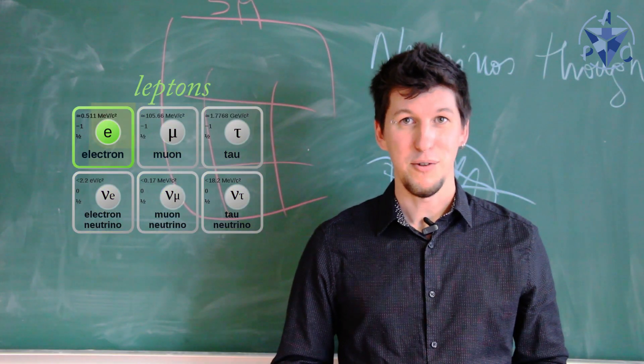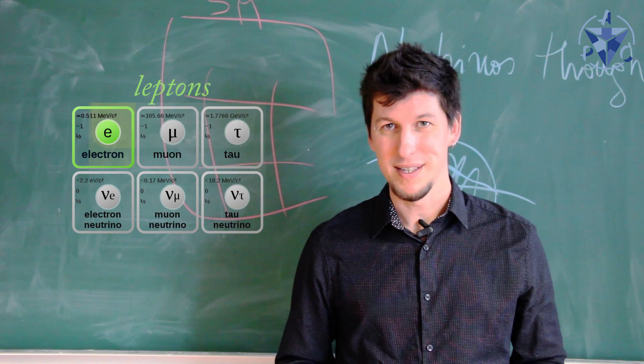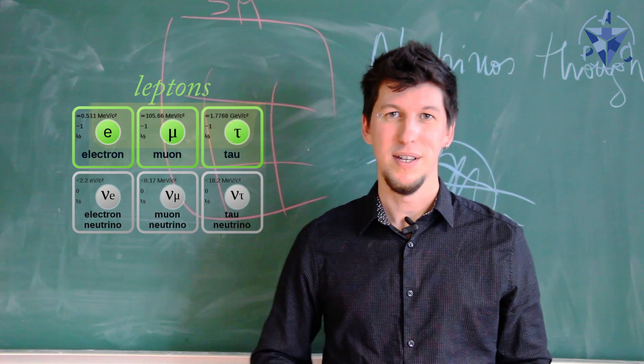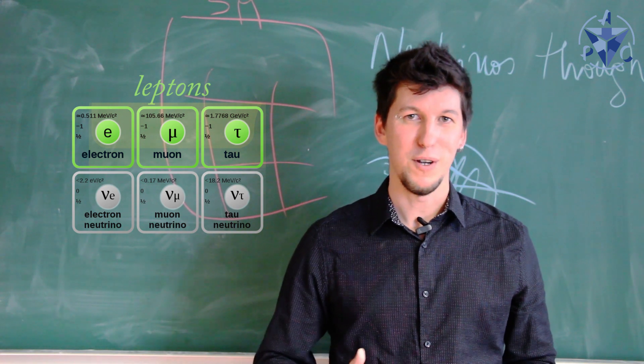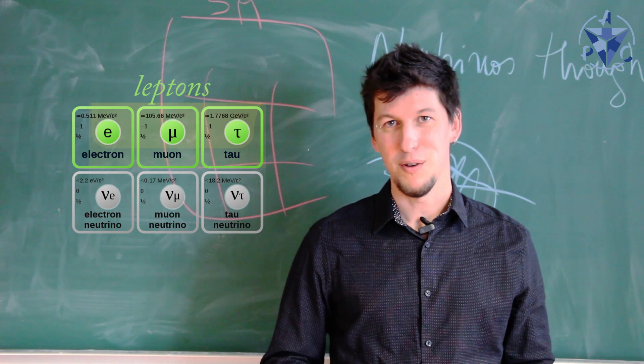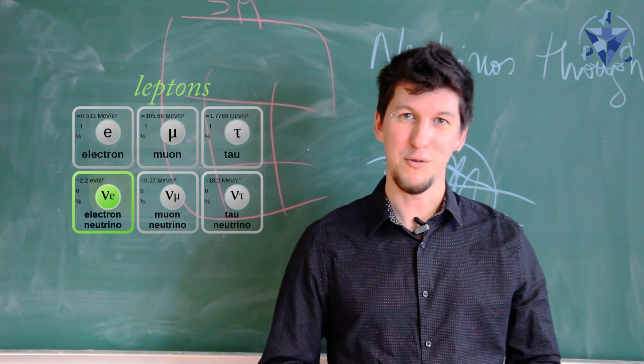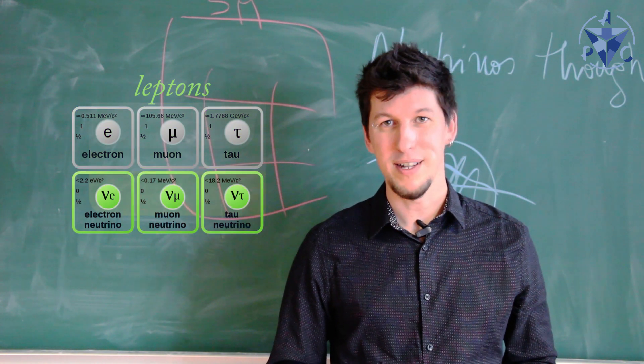For example, the electron has two heavier siblings, the muon and the tau. And because of the symmetries of the standard model, the neutrinos are associated with each of these. So there are three types of neutrinos: the electron neutrino, the muon neutrino, and the tau neutrino.